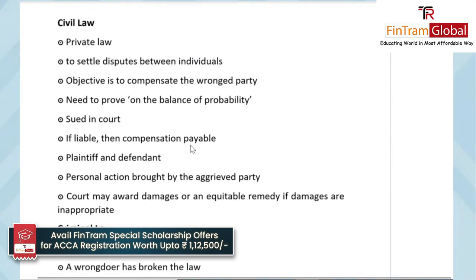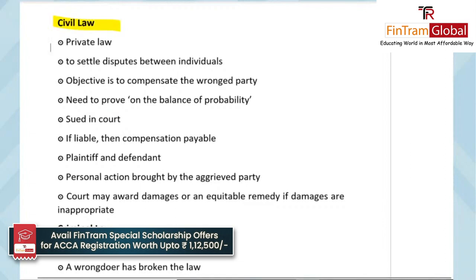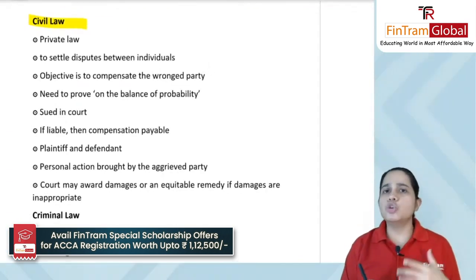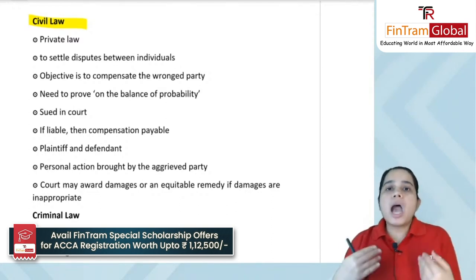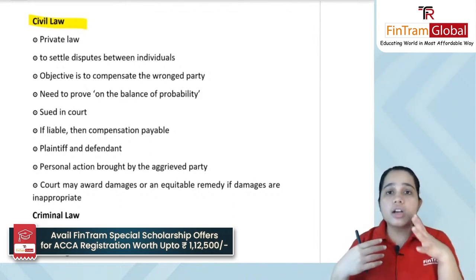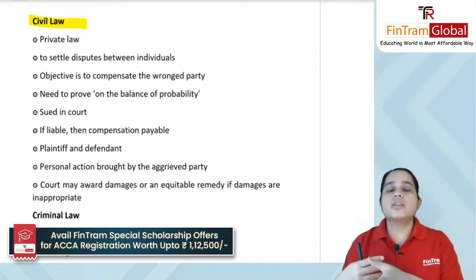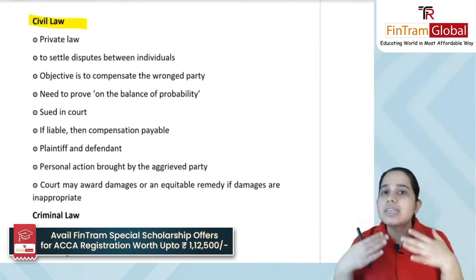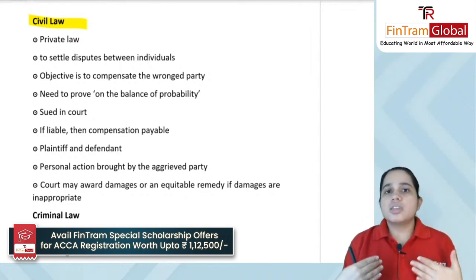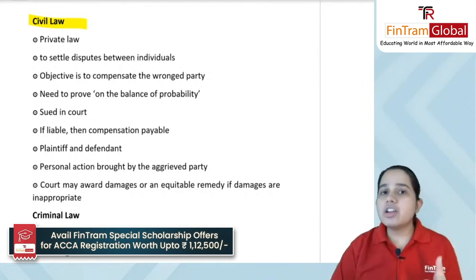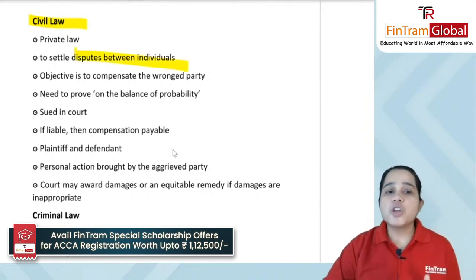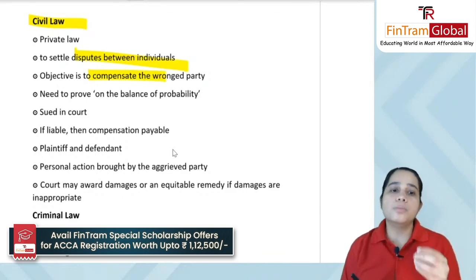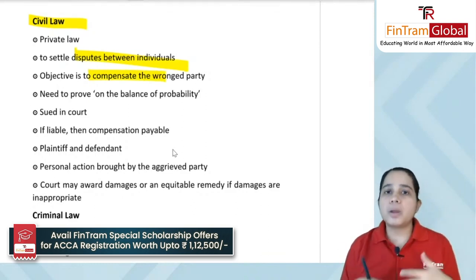Civil law is a private law. Here you basically settle any dispute that is happening between two individuals — the government is not involved. If I want to file a case against someone, that would be civil law. It is a private law that settles disputes between individuals. The objective is that the wrong party receives compensation — to compensate the wronged party.